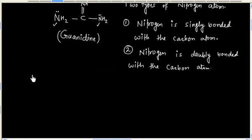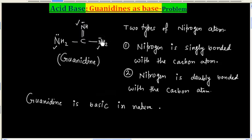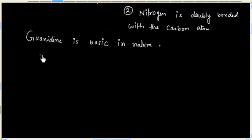Guanidine is very basic in nature. This is because of the lone pair at the nitrogen atom.